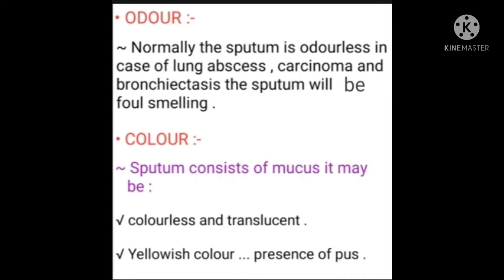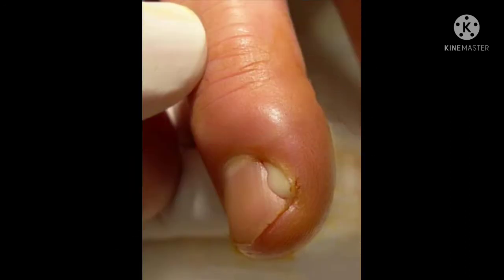Odor means smell. Normally the sputum is odorless. In cases of lung abscess, carcinoma, and bronchitis, the sputum will be foul-smelling. Next is color: sputum consists of mucus and may be colorless and translucent. Yellowish color indicates the presence of pus — pus is a thick yellowish or greenish opaque liquid.